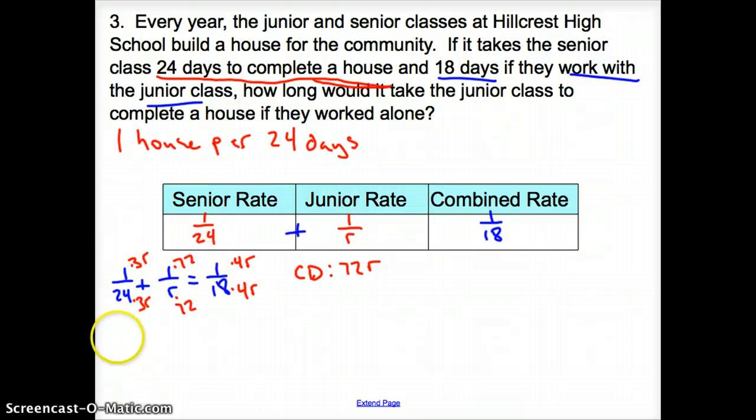Now that we have the same common denominators, we can just drop them. On top we are left with 3R plus 72 and that equals 4R. Subtract the 3R over, so we are left with just 1R. R equals 72. It would take the junior class 72 days to complete building the house by themselves.